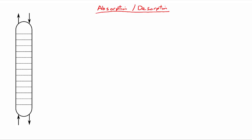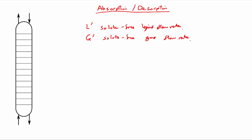We can define a few key terms. The first is L prime, our solute-free liquid flow rate. We can also define G prime, our solute-free gas flow rate. Because we're working on a solute-free basis, we want a slightly different basis for our solute instead of mole fractions. So we define capital X for solute A, which is the mole ratio of solute in the liquid to solute-free liquid.